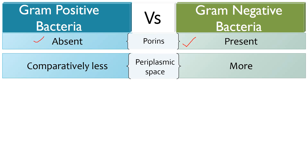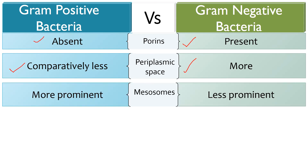Periplasmic space is the space between the outer and inner membrane. In gram-negative bacteria, the periplasmic space is greater — between the cell membrane and the outer membrane — while gram-positive bacteria lack an outer membrane, so they have less periplasmic space between the cell membrane and capsule. Mesosomes are structures formed by extension or invagination of the plasma membrane and appear in the form of vesicles and tubules. Mesosomes are more prominently seen in gram-positive bacteria than gram-negative bacteria, and they play an important role in cell wall synthesis and DNA replication.